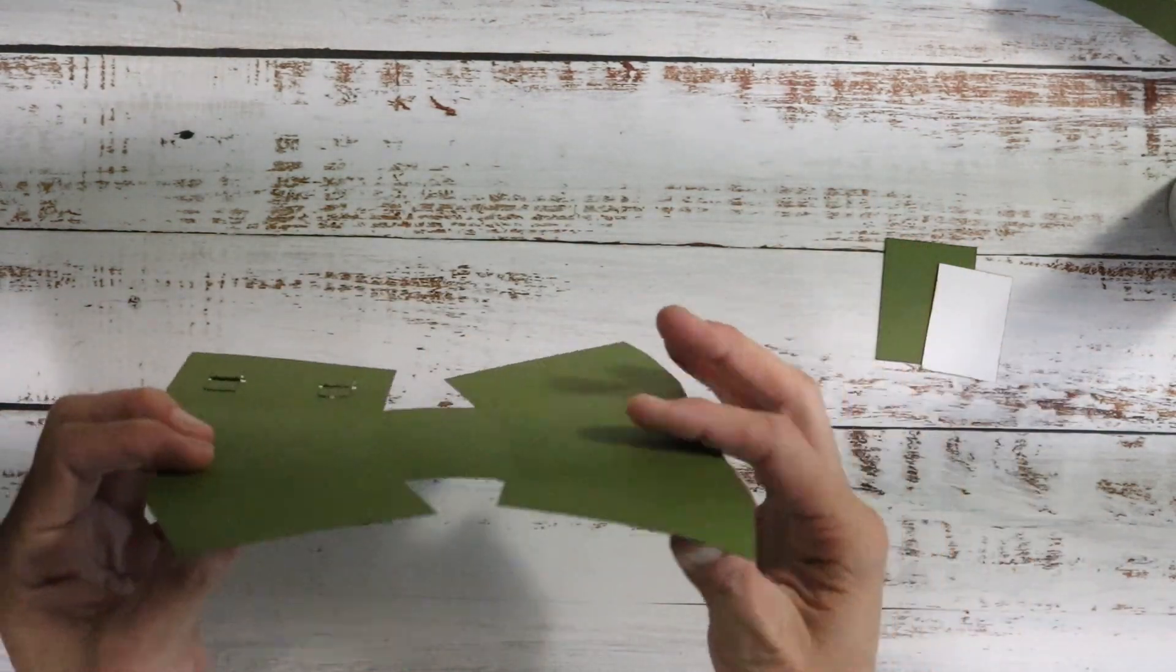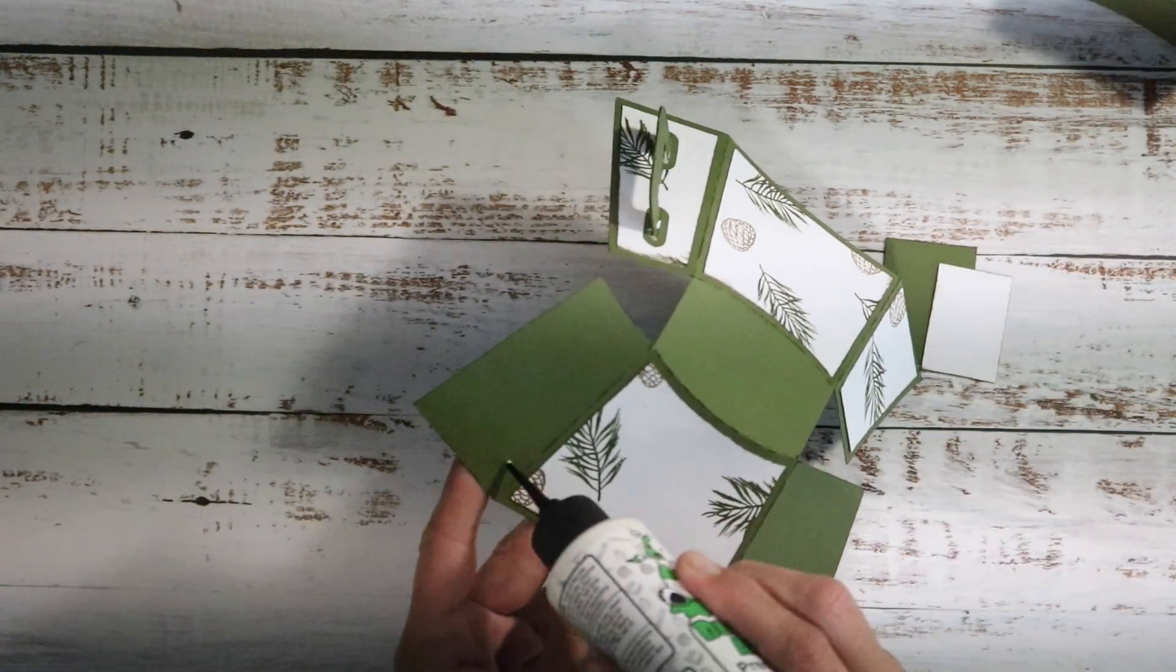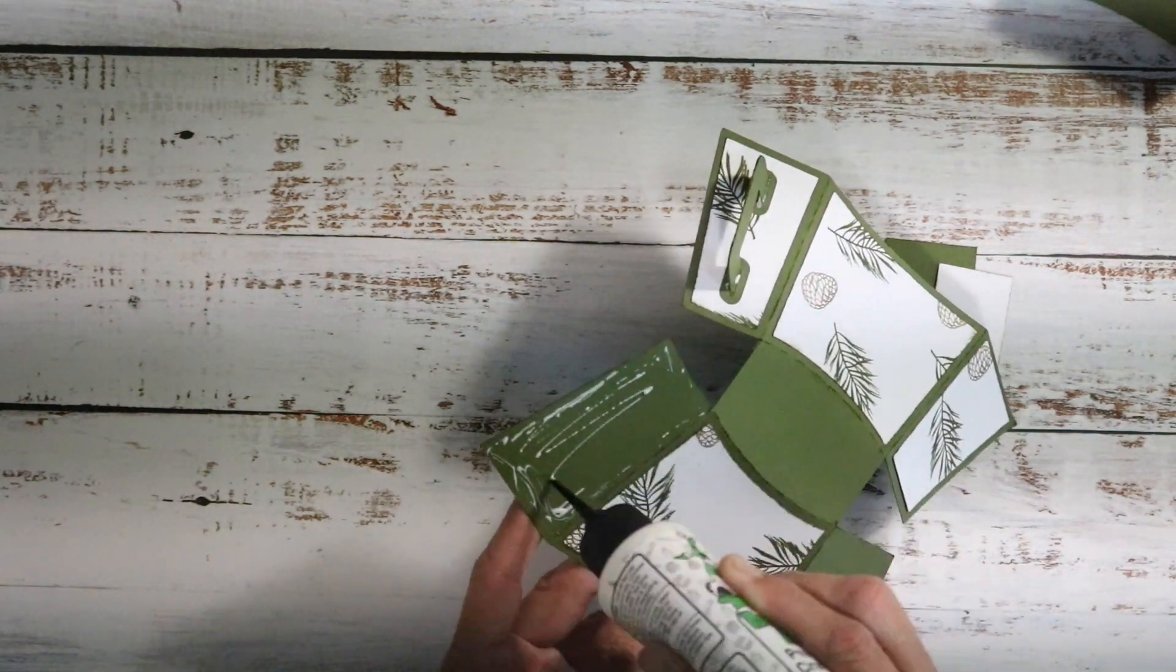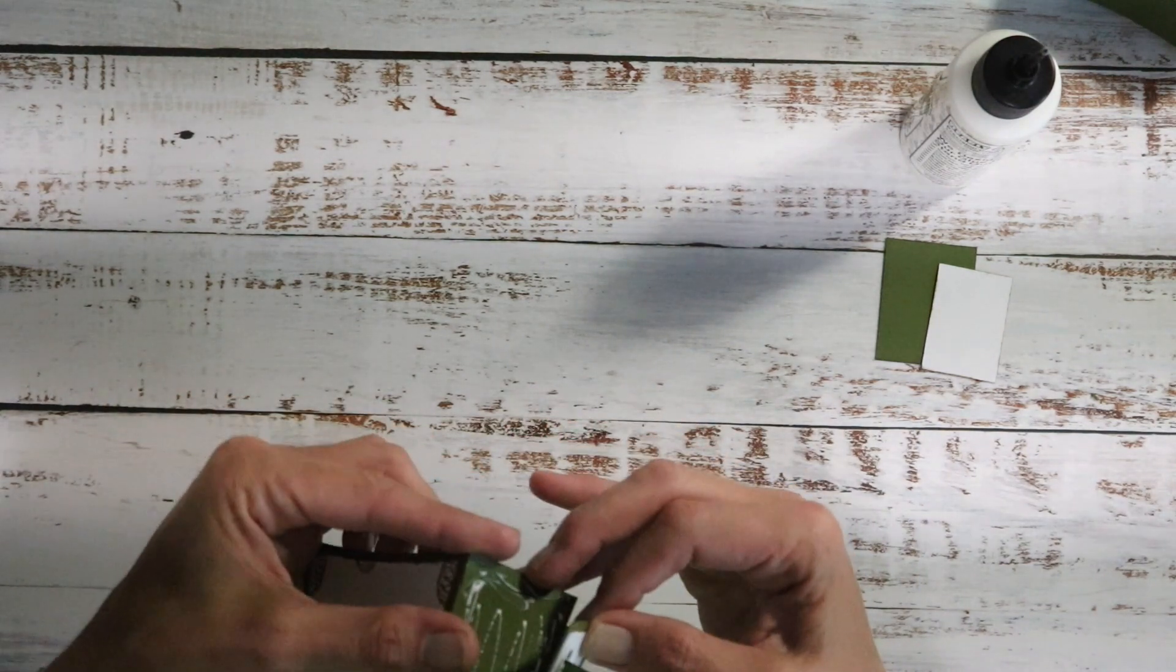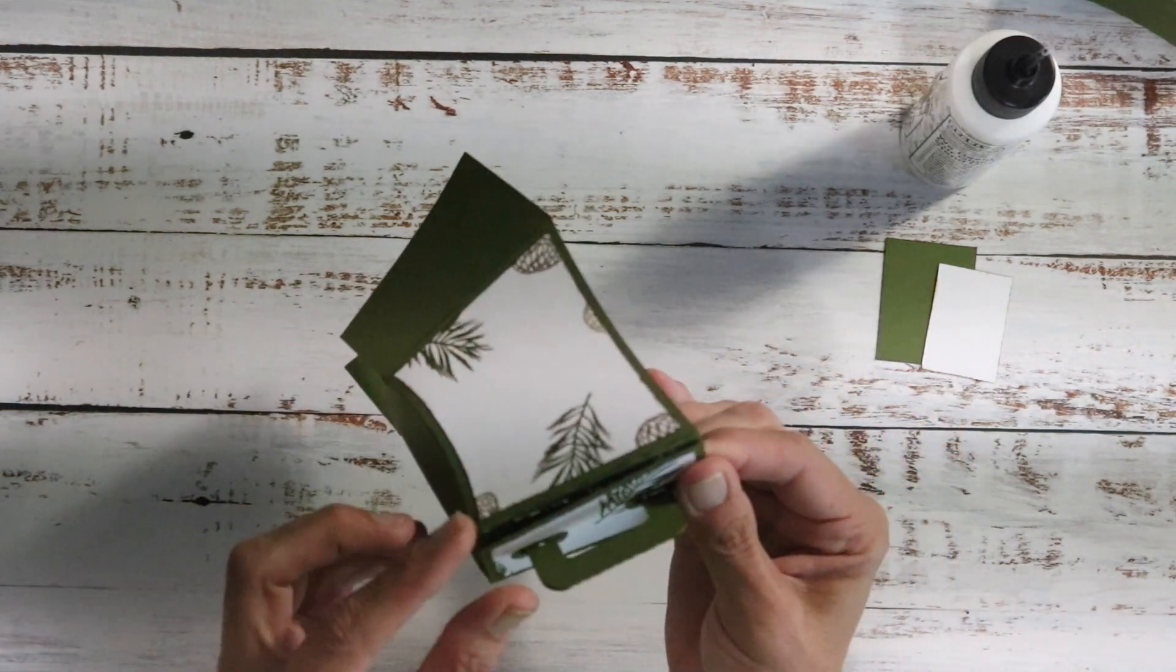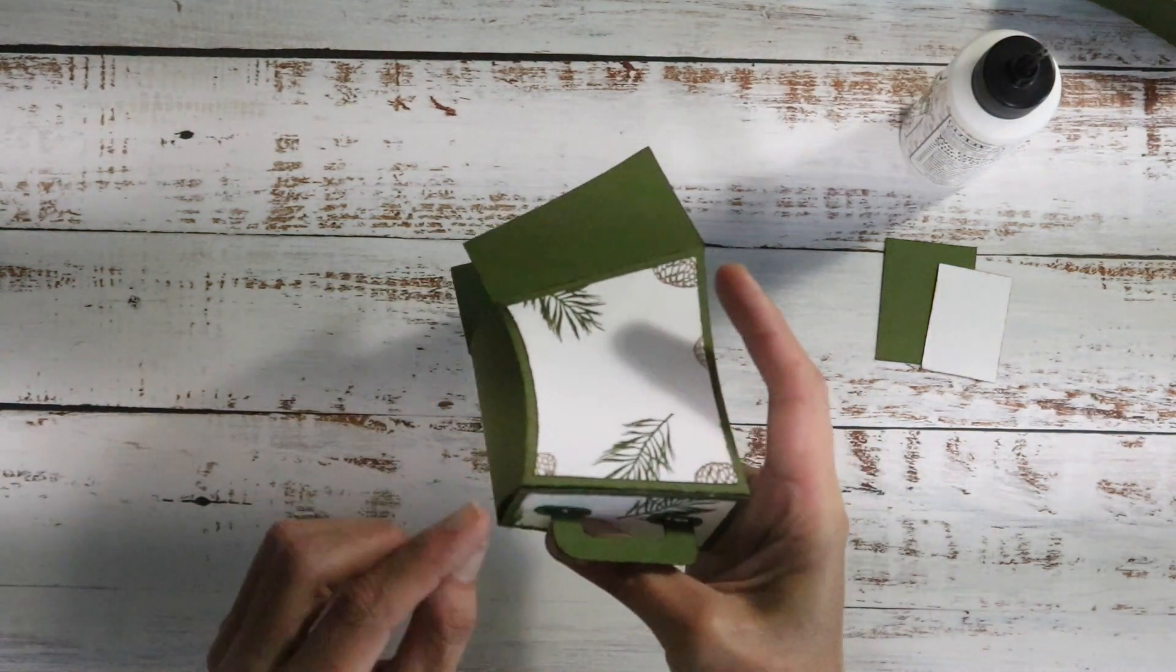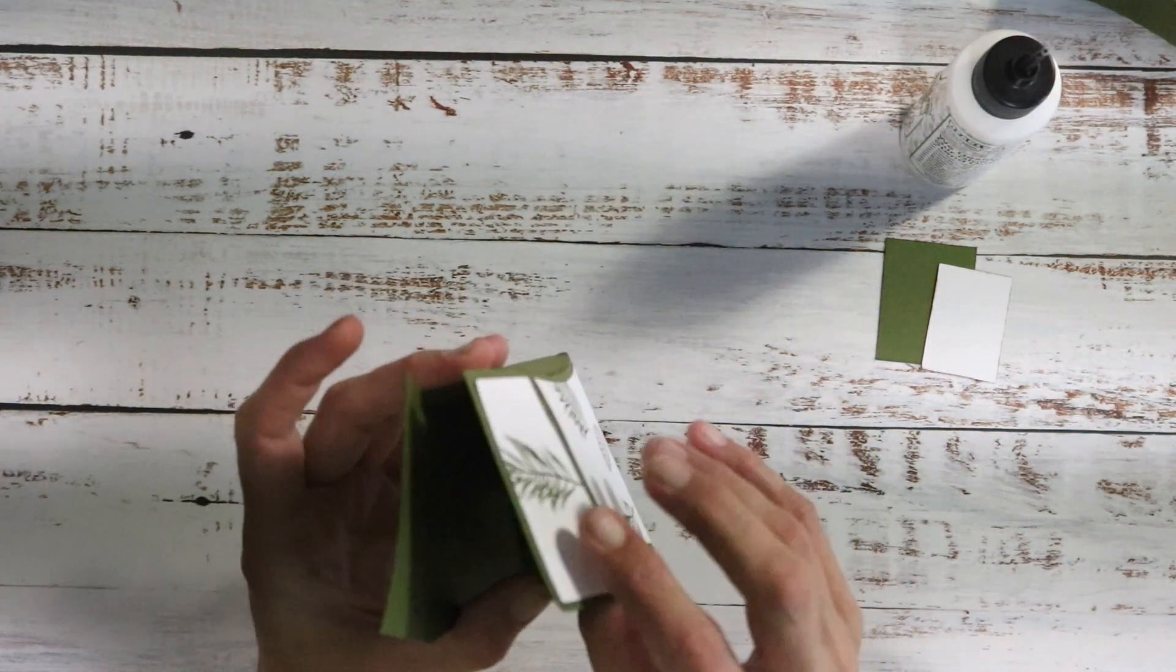To assemble we're going to put glue on these flaps and you want to have your glue go to the edge, as close as you can and also by the fold. Just bring this one up to this one, lining it up at the top and the sides. And the bottom of the box just kind of forms on its own.